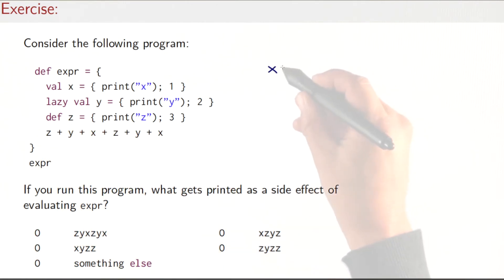Then we demand the value of y, so that would force the lazy val and would print the y. Then we would demand the value of x—this one is already evaluated so nothing would be printed. Then we demand the value of z again, so that would give us another z. Then y again—well now y is evaluated so we would just reuse the result we evaluated the first time around. And finally the x is again evaluated. So the string that gets printed is xzyz.